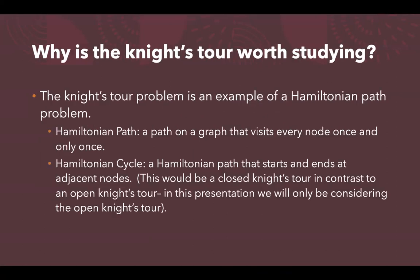One can ask what is the point of studying this question. If you're interested in chess, this is an interesting brain teaser, but it wouldn't help you win a chess game. The reason is the knight's tour problem is an example of a Hamiltonian path problem, and solving it — finding ways to solve it — is essentially finding ways to find Hamiltonian paths. A Hamiltonian path is a path on a graph that visits every node once and only once.